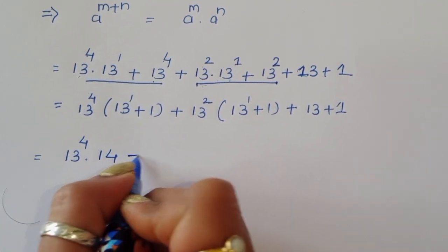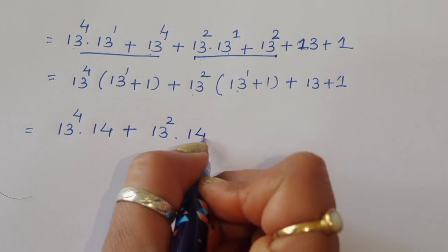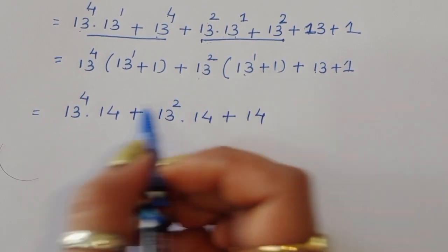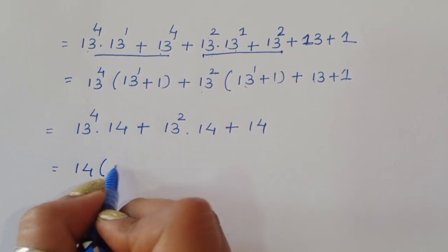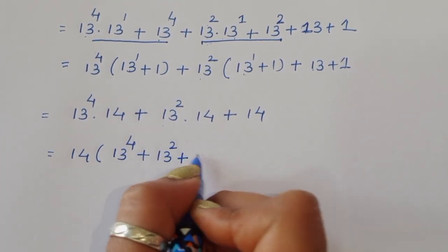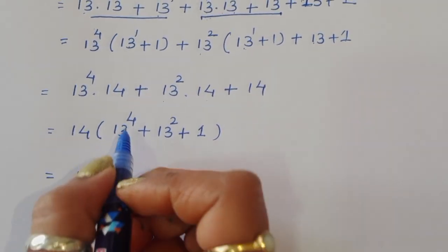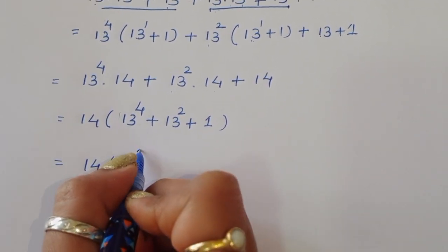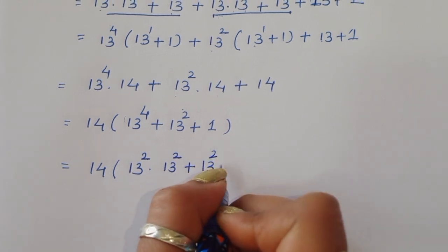This gives us 14 plus 13 power 0. We can see 14 appears as a factor, so we take 14 as common. Taking 14 common, the remaining term involves 13 power 0. We now have 14 times 13 power 4, and 13 power 4 we can write as 13 power 2 times 13 power 2, so we get 14 times (13 power 2 times 13 power 2 plus 13 power 2 plus 1).